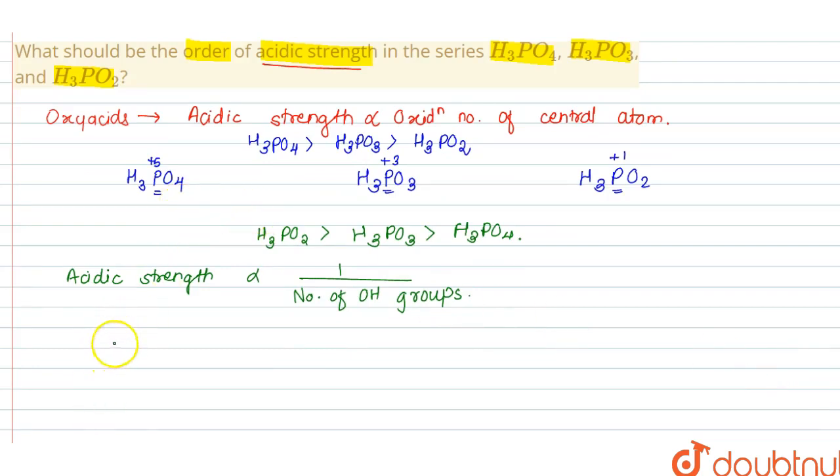The structure of H3PO4 is P double bond O with three OH groups. The structure of H3PO3 is P double bond O, OH, OH, and H. Here we have two OH groups. The structure of H3PO2 is P double bond O, OH, H, and H, so here there is one OH group.